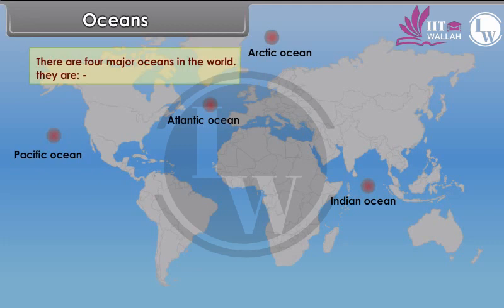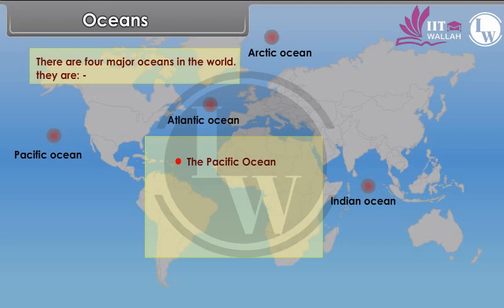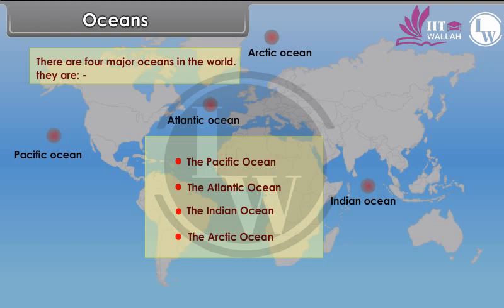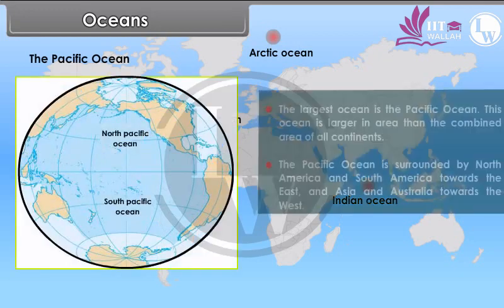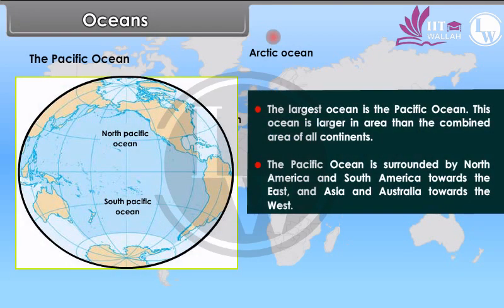There are four major oceans in the world: the Pacific Ocean, the Atlantic Ocean, the Indian Ocean, and the Arctic Ocean. The largest ocean is the Pacific Ocean, which is larger in area than the combined area of all continents. The Pacific Ocean is surrounded by North America and South America towards the east, and Asia and Australia towards the west.